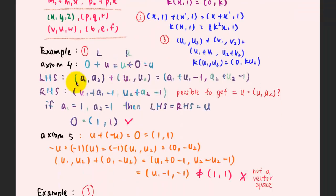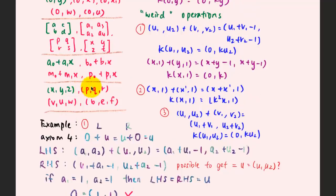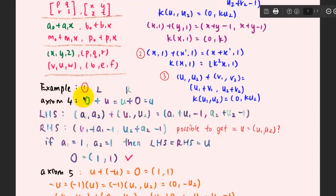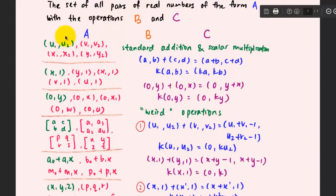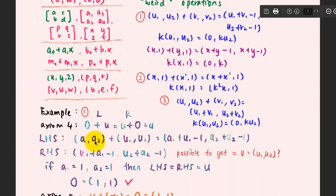We are going to look at the first and third operations as examples for proving axioms. The fourth and fifth axioms are the most interesting. For axiom 4, there must be a zero vector such that when added to any member from that group of vectors, you get back the original vector. Remember, the zero vector does not necessarily have to be a vector of zeros — it could be any vector. Let's try the left-hand side first, taking members a1, a2 and u1, u2 from this group.